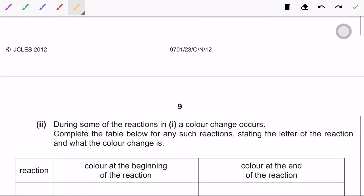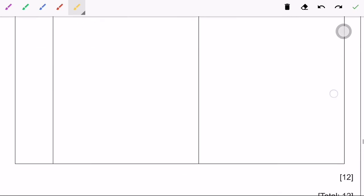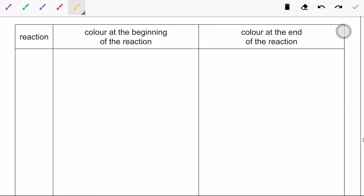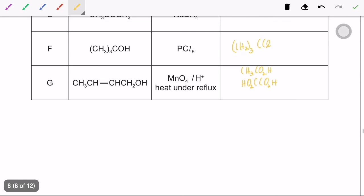Complete the table below for any such reactions, stating the letter of the reaction and what the color change is. So you must notice that they have given space for only one reaction, so it means that they expect you to write only one reaction. They expect you to know about only one reaction. The reaction is reaction G. You must notice that with the MnO4 negative, they always use this one.